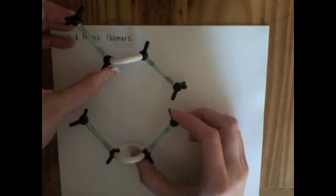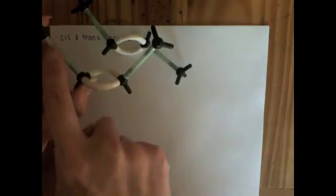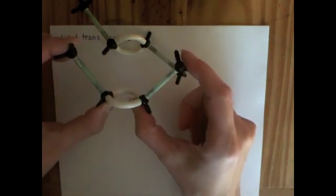When we have these two totally different molecules, we distinguish them from each other using the cis and trans notation. When we have the carbon chain on the same side of the double bond, we call that the cis-isomer,